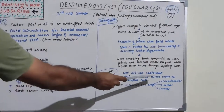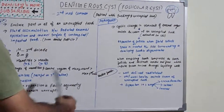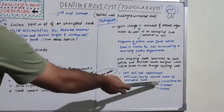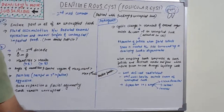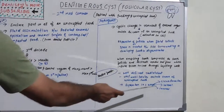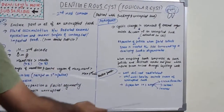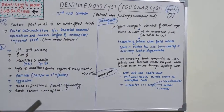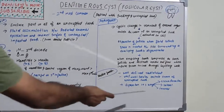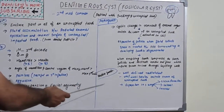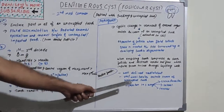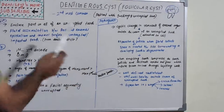In radiographic features, dentigerous cyst appears as a well-defined radiolucent area. It can be unilocular or multilocular and covers the entire crown of the unerupted tooth. Radiographically, expansion can occur in three directions: circumferential, lateral, or coronal. These three types of growth can be observed radiographically, though a radiograph is needed to clearly distinguish these patterns.